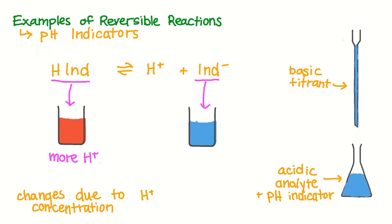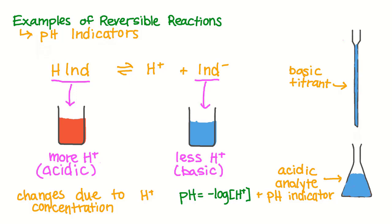The color of the indicator changes depending on the concentration of hydrogen ions in the solution. When there's more H-plus ions in the solution, meaning that the solution is acidic, the indicator is one color. But as we add the base during this experiment, it will react with the H-plus ions in the solution, causing the concentration of H-plus ions to decrease, which will make the solution more basic and the indicator will change color. Since the pH is related to the concentration of hydrogen ions in the solution, we can use the color of the pH indicator to give us a rough estimate of the pH of the solution. The exact pH that this color change happens depends on the properties of the indicator, and we have many different molecules that can act as indicators, meaning we have indicators that we can use for a variety of pH values.